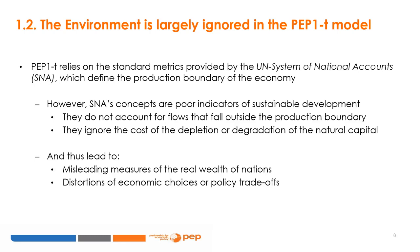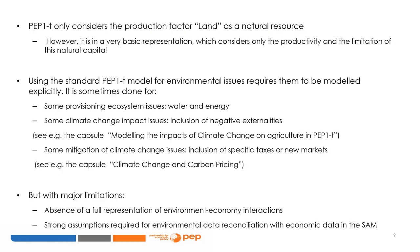Not accounting for natural capital has strong consequences. It leads to wrong measures of the real wealth of nations and pervades decision-making at all scales — from the microeconomic level, via market prices that fail to reflect a product's full costs and benefits, up to the macroeconomic level, for instance in excluding environmental values from policy trade-offs. In its basic structure, PEP-1-T has very little to say about environmental aspects. The sole natural resource included is land, which is sometimes considered as a production factor for some economic activities like the agricultural sector, but only in a basic representation allowing consideration of productivity or scarcity of land.